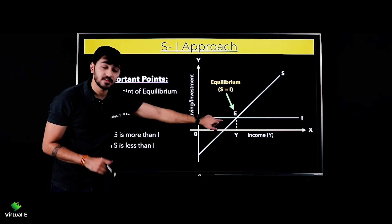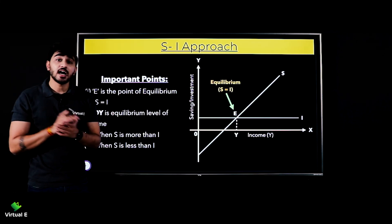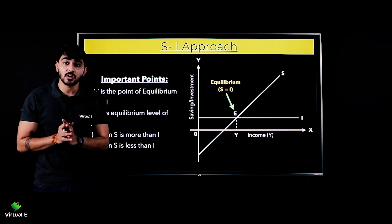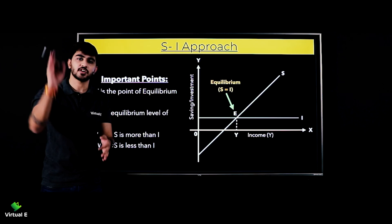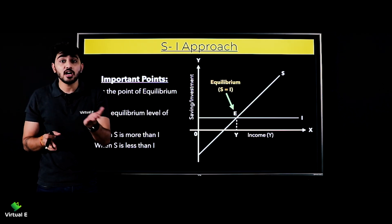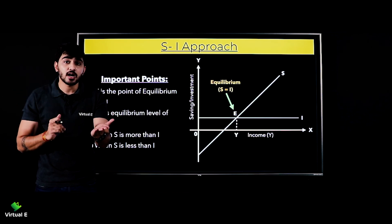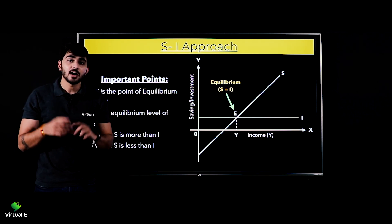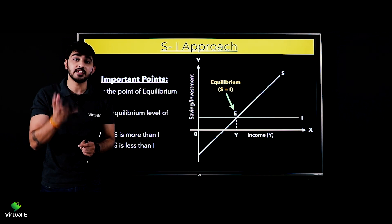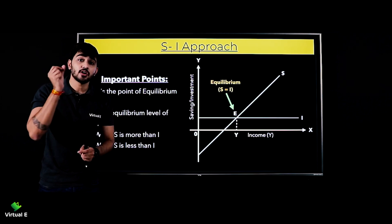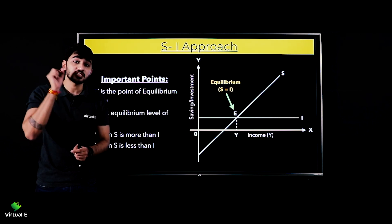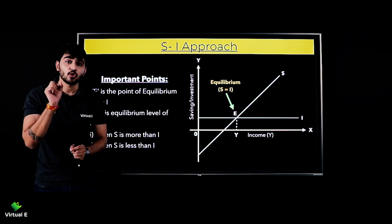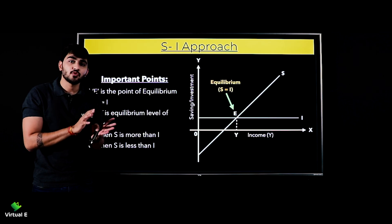Ab samajte hain when S is less than I - is phase mein log jada consume kar rahe hain. Humne socha tha ki sirf 100 ka consumption hoga, but yahan pe log save hi nahi kar rahe, sirf consume kiye ja rahe hain. Toh total demand ho gayi 120 units ki, humne produce kiya 100 units. Extra 20 units hum kahan se layenge - hum apni inventory mein se leke aayenge. So whenever your S is less than your investment, your inventory will always go down. Yeh tha aapka S and I approach.